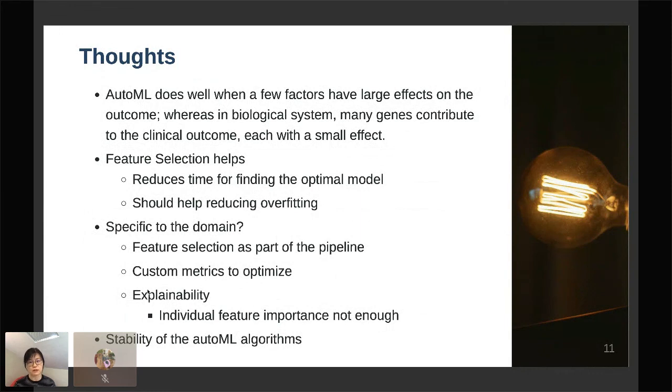And lastly, the stability of the AutoML algorithms. Because we have this small sample problem, I'm not sure whether if I change my input a little bit or I change my random seed, do I get a completely different model? So that needs to be investigated as well.